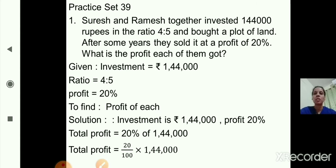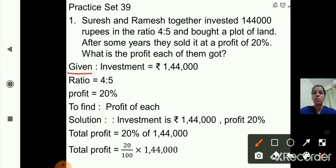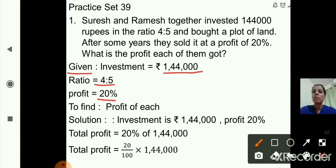Question number 1: Suresh and Ramesh together invested 1,44,000 rupees in the ratio 4 is to 5 and bought a plot of land. After some years they sold it at a profit of 20%. What is the profit each of them got? So first we write down what is given: total investment is 1,44,000, ratio is 4 is to 5, and profit is 20%. We have to find the profit of each.